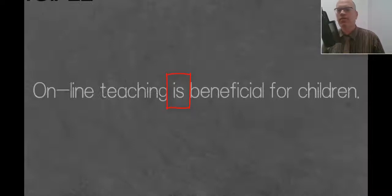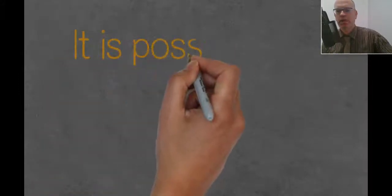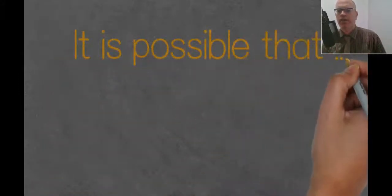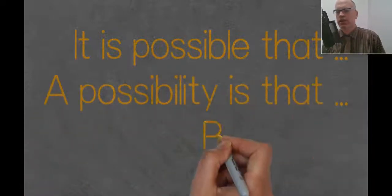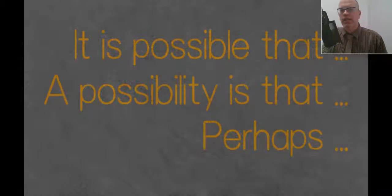So these are some things we can do to make our writing more honest. Firstly, we can add some words before the main part of the sentence. So we could say these things. It is possible that, or a possibility is that, or perhaps. So those three phrases that we have there are making the sentence less 100%. We're making it more honest, basically, and more cautious.